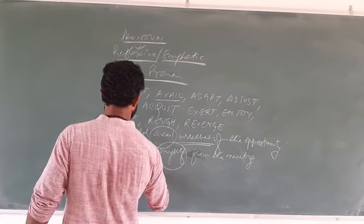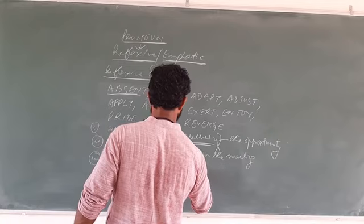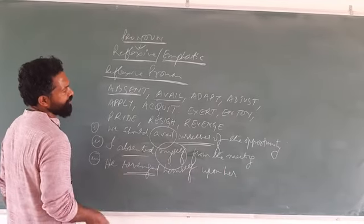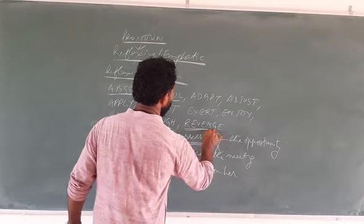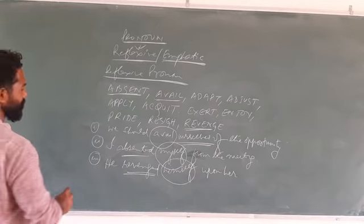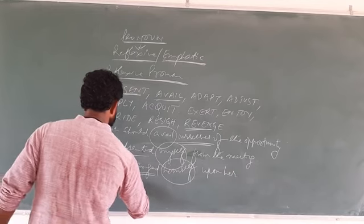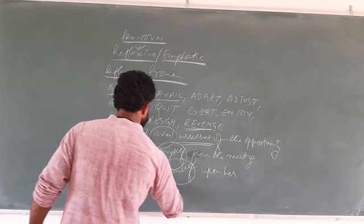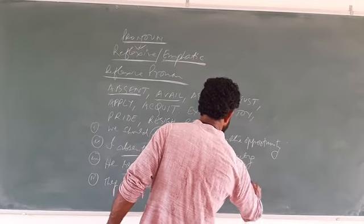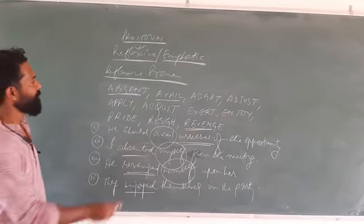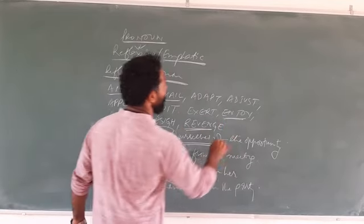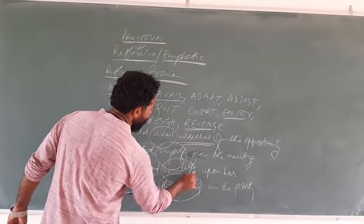'He revenged himself upon her.' Here the verb 'revenge' is in the list, so you use the reflexive form 'himself.' Another example: 'They enjoyed themselves in the party.' The verb 'enjoyed' is in the list, and that's why the reflexive pronoun 'themselves' must be used.